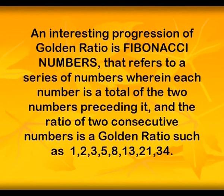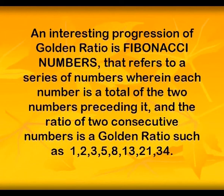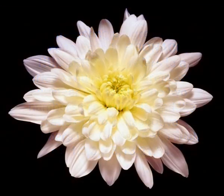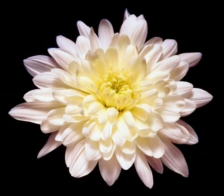An interesting progression of the golden ratio is the Fibonacci numbers, referring to the series of numbers where each number is the total of the two numbers preceding it, and the ratio of two consecutive numbers is the golden ratio — such as 1, 2, 3, 5, 8, 13, 21, 34.